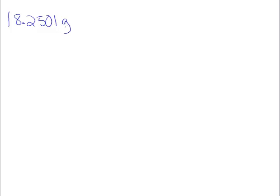Let's do some examples in rounding. Here's our first value: 18.2501 grams. We're going to round it to three significant digits, and then to four significant digits. It's important to recognize how many we have to start with: 1, 2, 3, 4, 5, 6 significant digits.